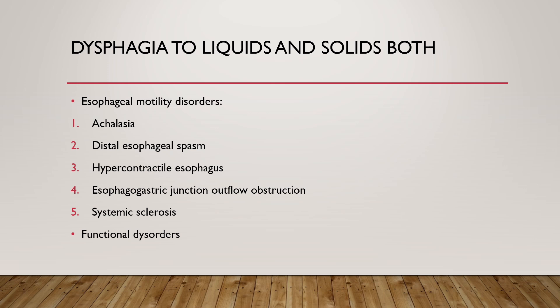If dysphagia is to both liquids and solids, we consider esophageal motility disorders and functional disorders. Achalasia — the major motility disorder — is loss of normal peristalsis in the distal esophagus leading to failure of the lower esophageal sphincter to relax, causing progressive dysphagia to solids and liquids with regurgitation of bland undigested food or saliva. Distal esophageal spasm and hypercontractile esophagus (Jackhammer esophagus) cause intermittent dysphagia to solids and liquids, and on barium swallow show a corkscrew esophagus due to non-peristaltic contractions.